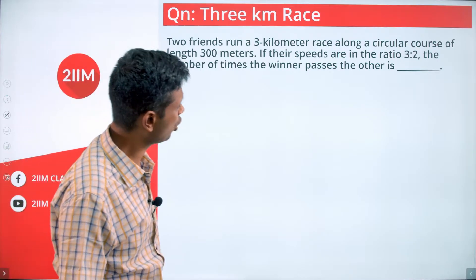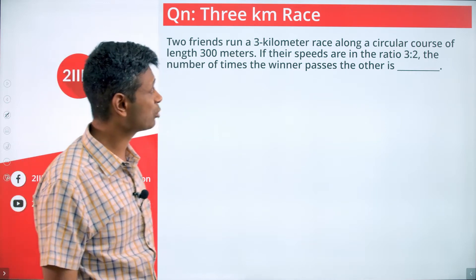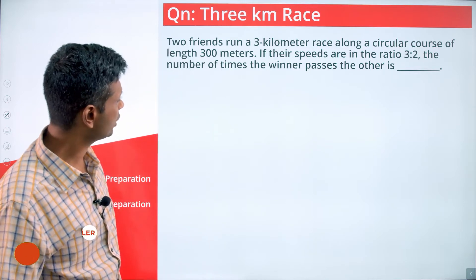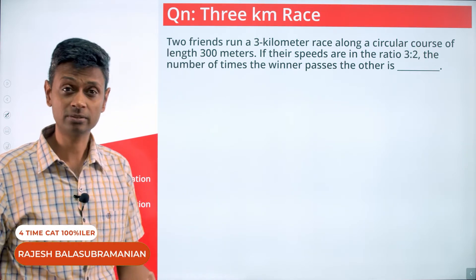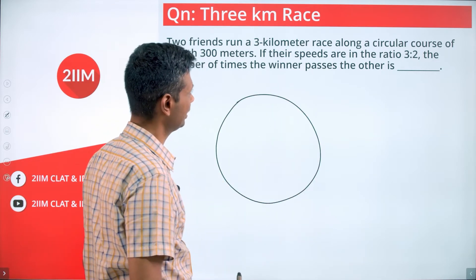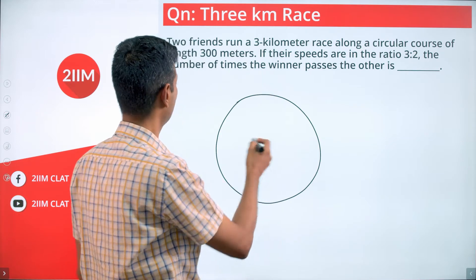Two friends run a three kilometer race around a circular course of length 300 meters. Their speeds are in the ratio 3 is to 2. The number of times the winner passes the other - it's a three kilometer track. Their speeds are in the ratio 3 is to 2. Let's say, forget even 3 kilometers, let's say the lap length is l.